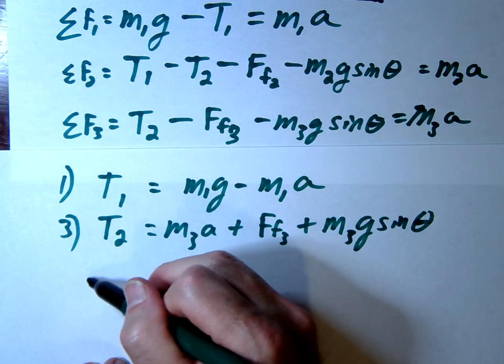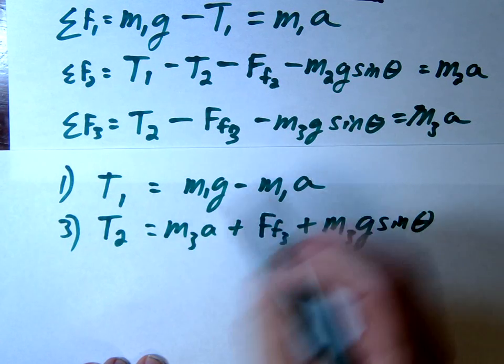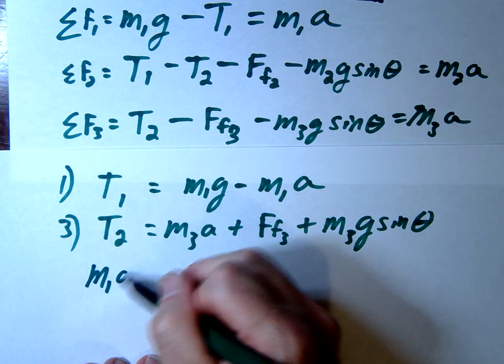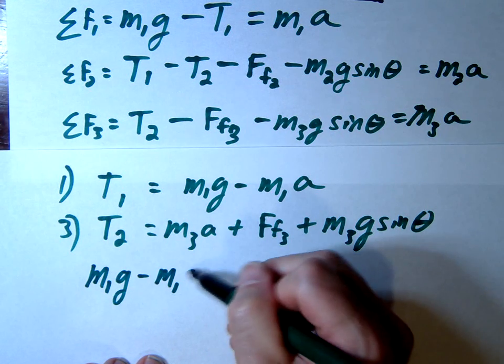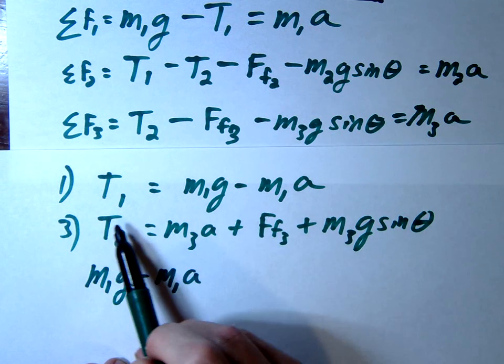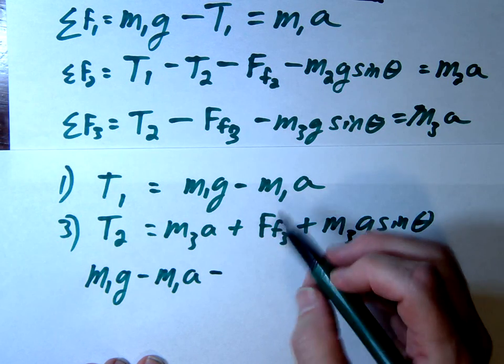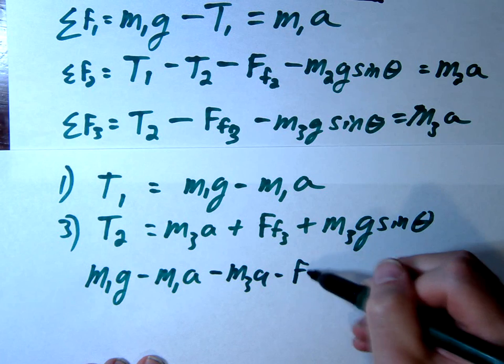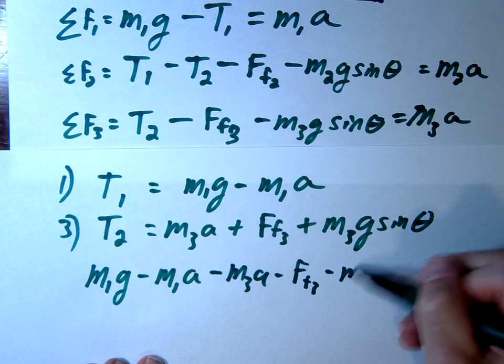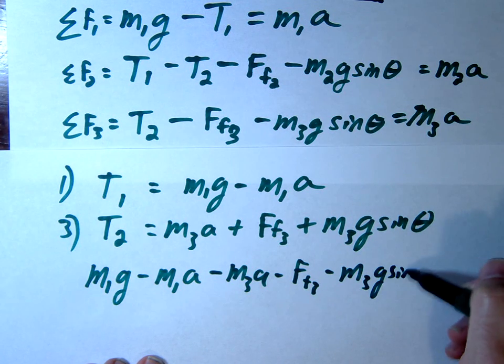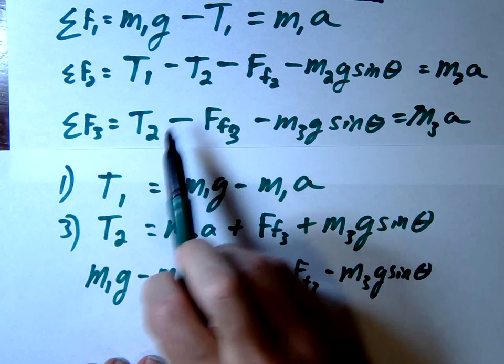So that's going to give us, let's see, what's that going to give us? Make the T1 sub, so that's going to be M1G minus M1A. Then we're going to make the T2 sub. So it's going to be minus M3A minus friction 3 minus M3G sine. Okay, we made that sub, right?